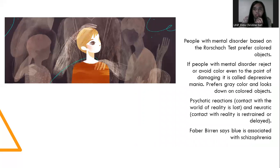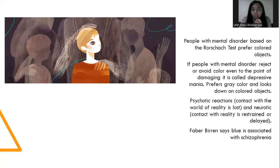How about people's mental state and color? People with mental disorder, based on the Rorschach test, prefer color objects. If people with mental disorder reject or over-refer to color even to the point of delusion, it is called depressive mania. Preferring gray color and looking down at color objects is a psychotic reaction — contact with the world of reality is lost. People with mental disorder can consult a physiotherapist or psychologist and share about their problems and emotions to find resolution.